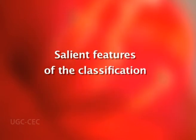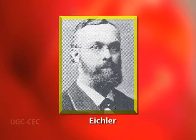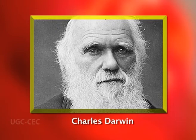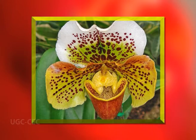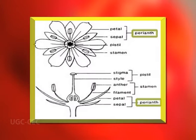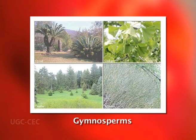Now the salient features of this classification: this system is based on Eichler's system, who was the first person to propose an evolutionary system of classification. It is an evolutionary system proposed subsequent to the acceptance of Darwin's theory of evolution, based on the assumption that flowering plants where the perianth is absent are evolutionarily primitive.